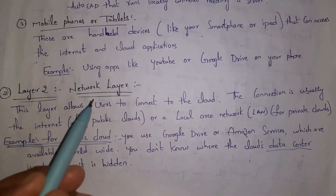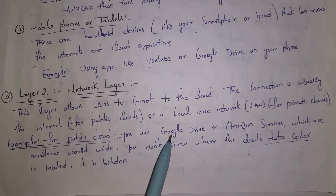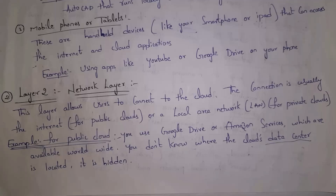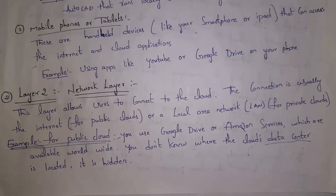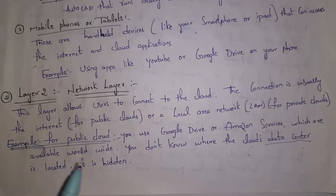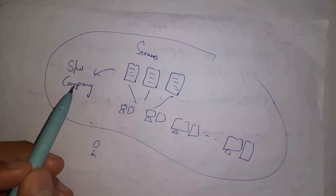The second layer is the network layer. By using the network layer, users can connect to the cloud. This connection is usually the internet for public clouds or a local area network for private clouds. For example, AWS and Google Drive are public clouds because anyone can use them via the internet. A data center is the physical location where a company's servers are stored — it is hidden from users.